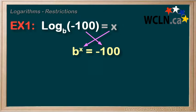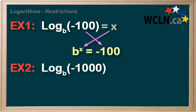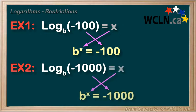Try another. Example 2, log base b of negative 1000. Another negative. Let's just switch it into exponential form right away this time. And we'd have b to the power of x equals negative 1000.